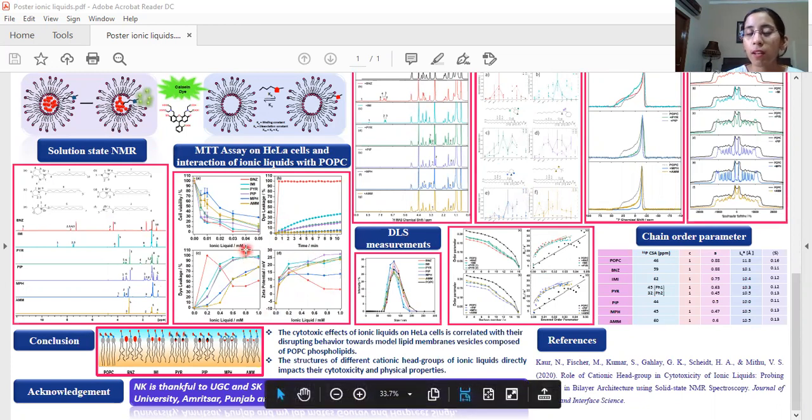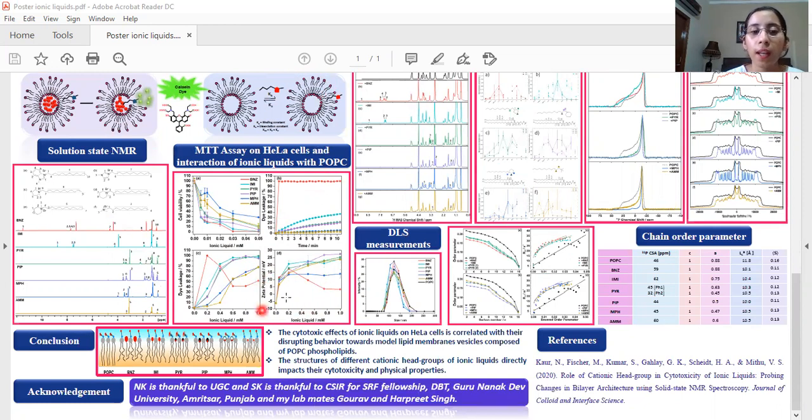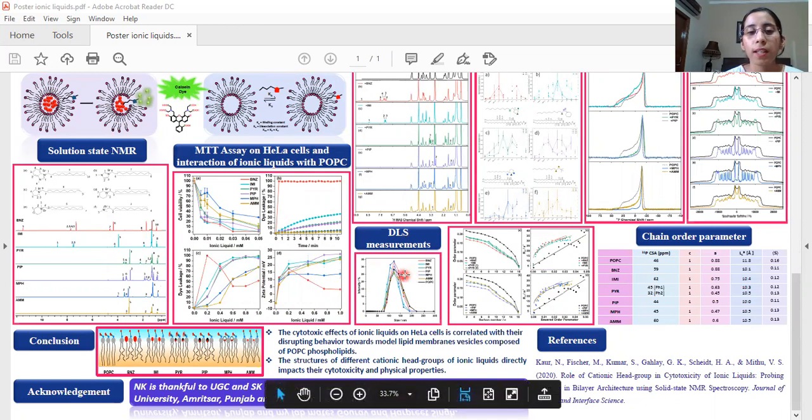Zeta potential measurements where we determined the potential around the vesicles also stated that benzimidazolium is most disrupting and the morpholinium to be the least one.